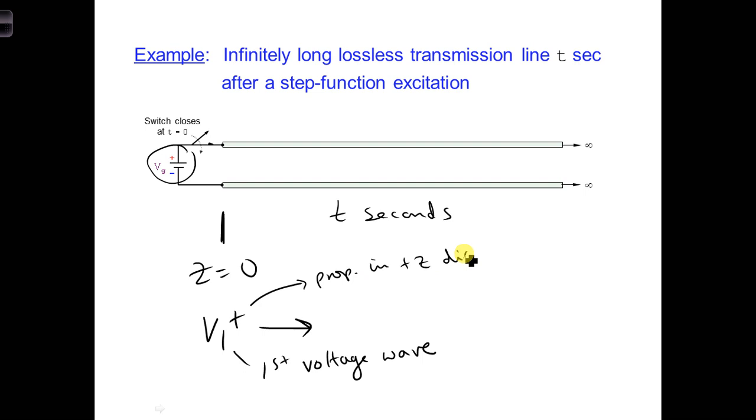This means we have a step function propagating down the transmission line, and the amplitude of that step function is V1+, which is equal to Vg in this case.